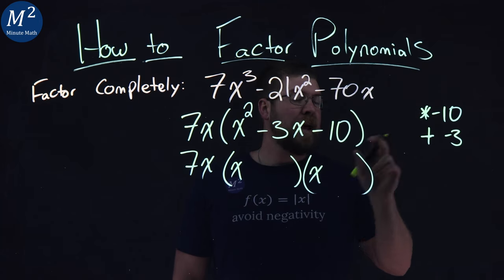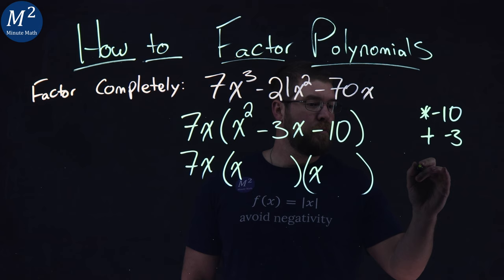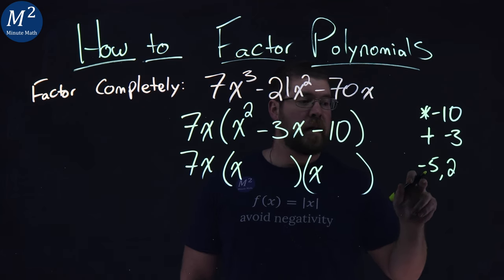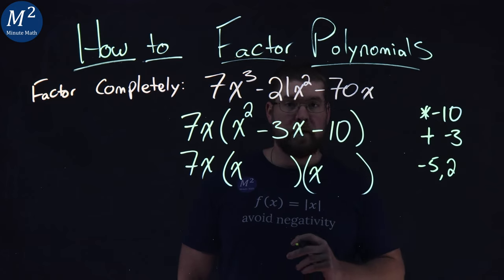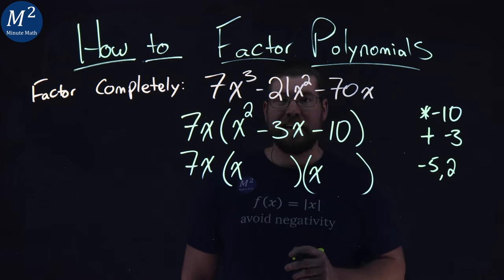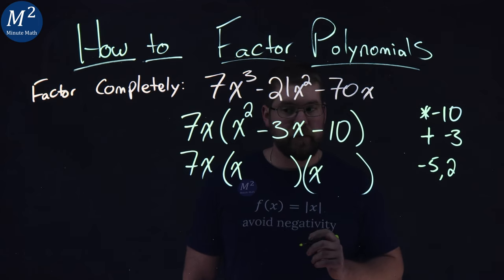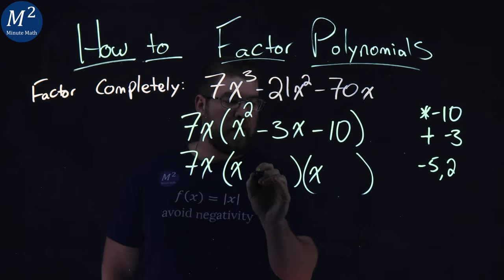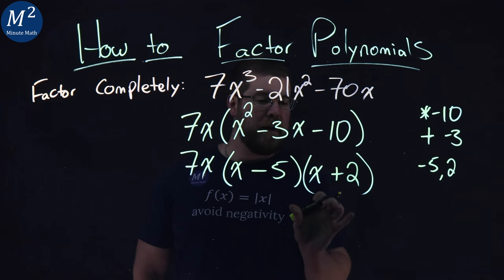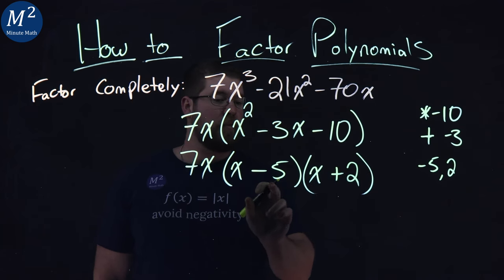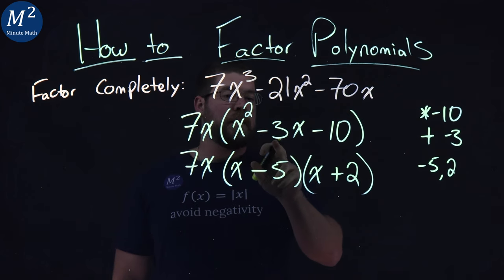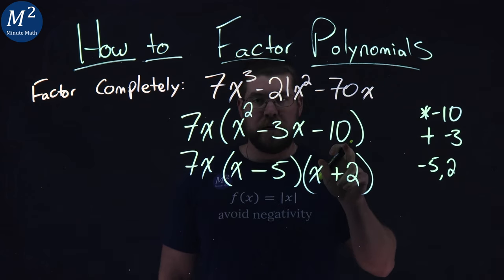If I have a negative 5 and a positive 2, you can see that negative 5 times positive 2 is a negative 10, and negative 5 plus positive 2 gives me a negative 3. So if I have an x minus 5 and an x plus 2, that factors out as x minus 5 times x plus 2. When we multiply it out, it gives us x squared minus 3x minus 10.